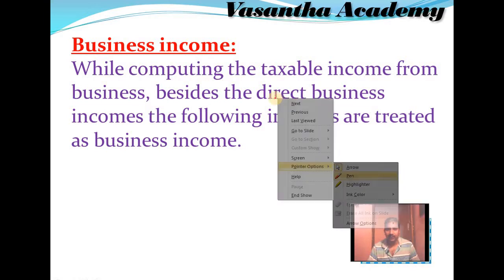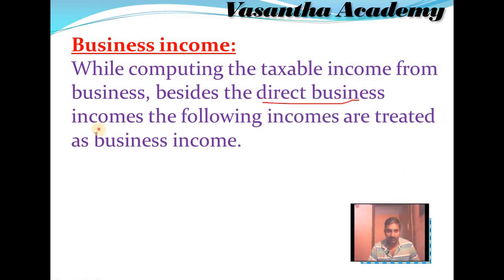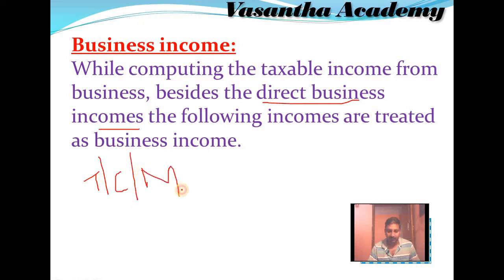First, let us understand direct business incomes. It refers to any economic activity for earning profit. Here, activity refers to any trade, commerce, or manufacturing, etc. Earnings from all of these are considered as business income. Let us understand with the help of one example.